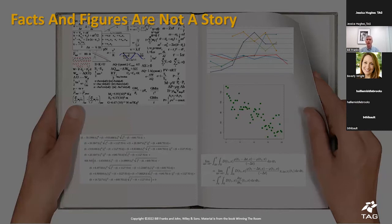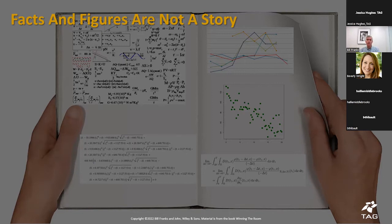Facts and figures are definitely not a story. A story means laying out what you found, why it would be compelling to that audience, how you're going to get it across, and what you're going to recommend they do. As you talk through the story, try to get them excited — say things like 'wouldn't it be great when we can' or 'imagine once we're able to.' Have fun talking about what you found; if you're comfortable, your audience will be too.